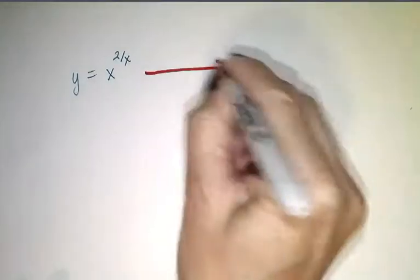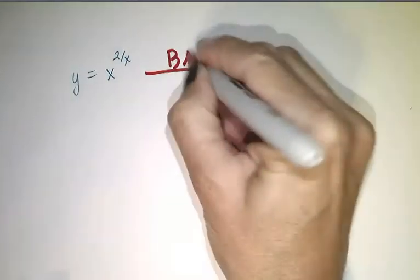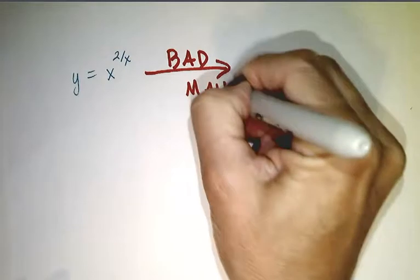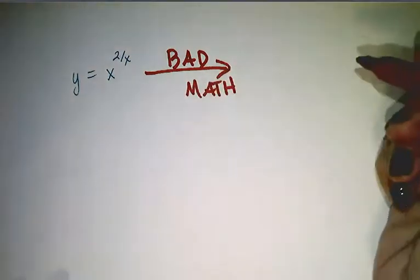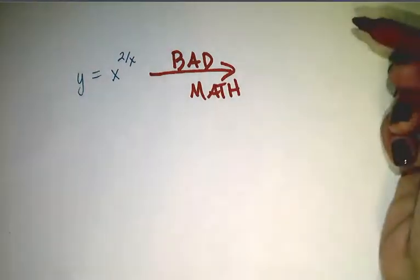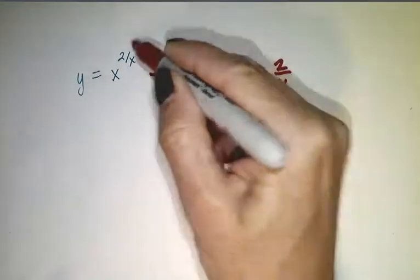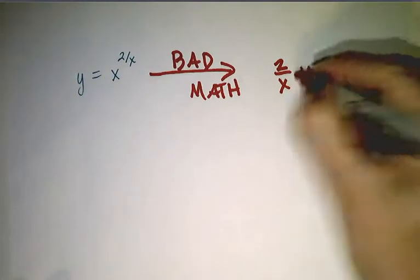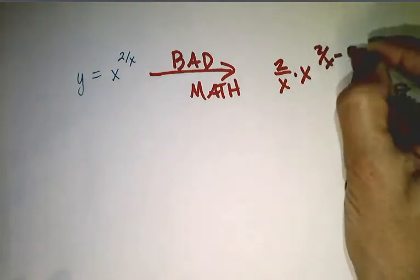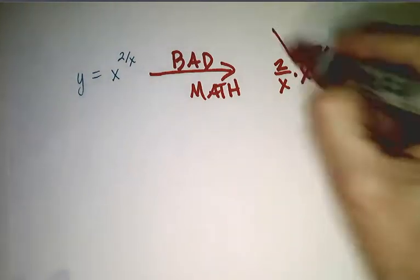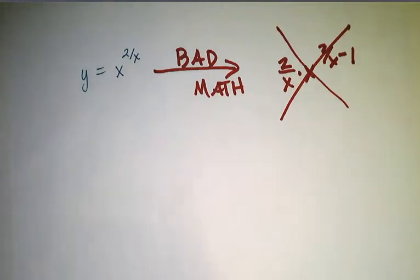Let's look at the first one: y equals x to the 2 over x. First and foremost, let's remember what is bad math - the tempting temptation to apply the power rule, to bring this power down in front of the variable and then subtract 1. That is bad math and we will not do that.